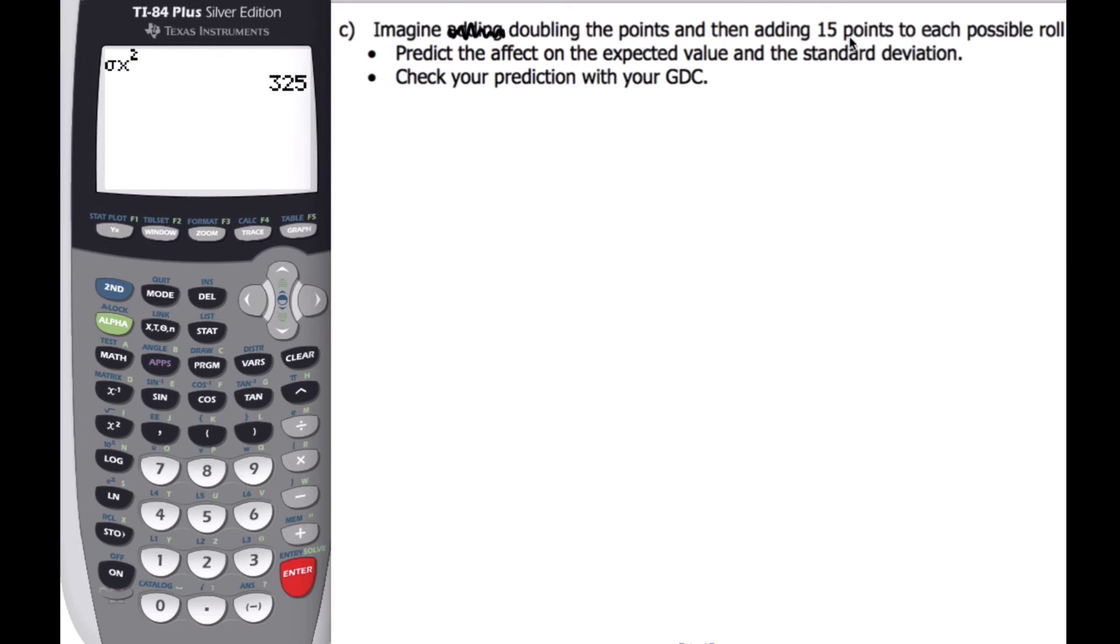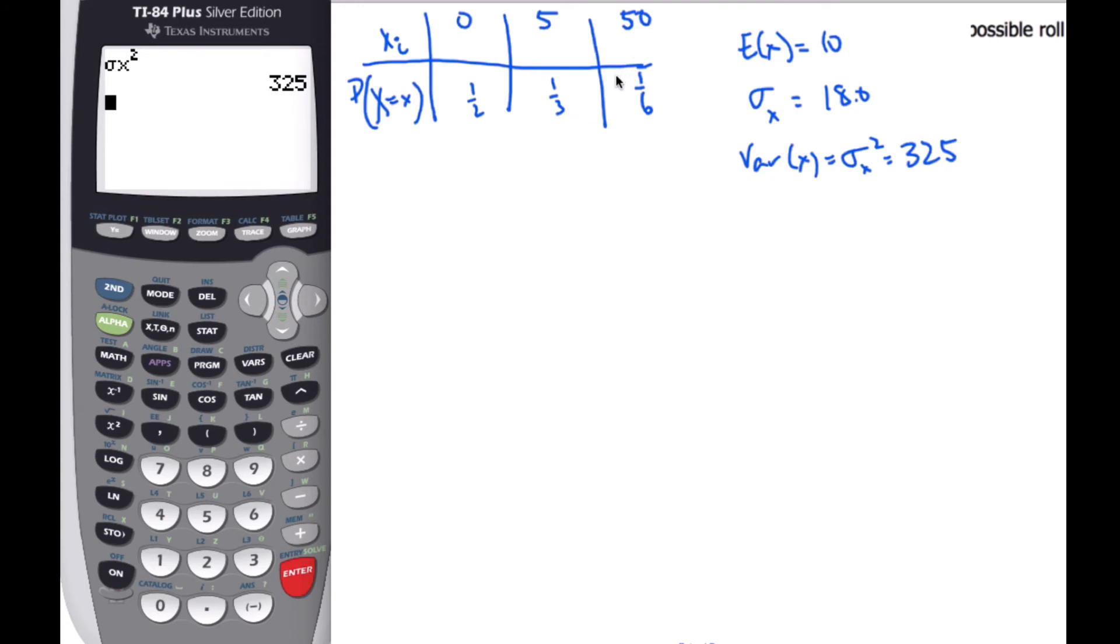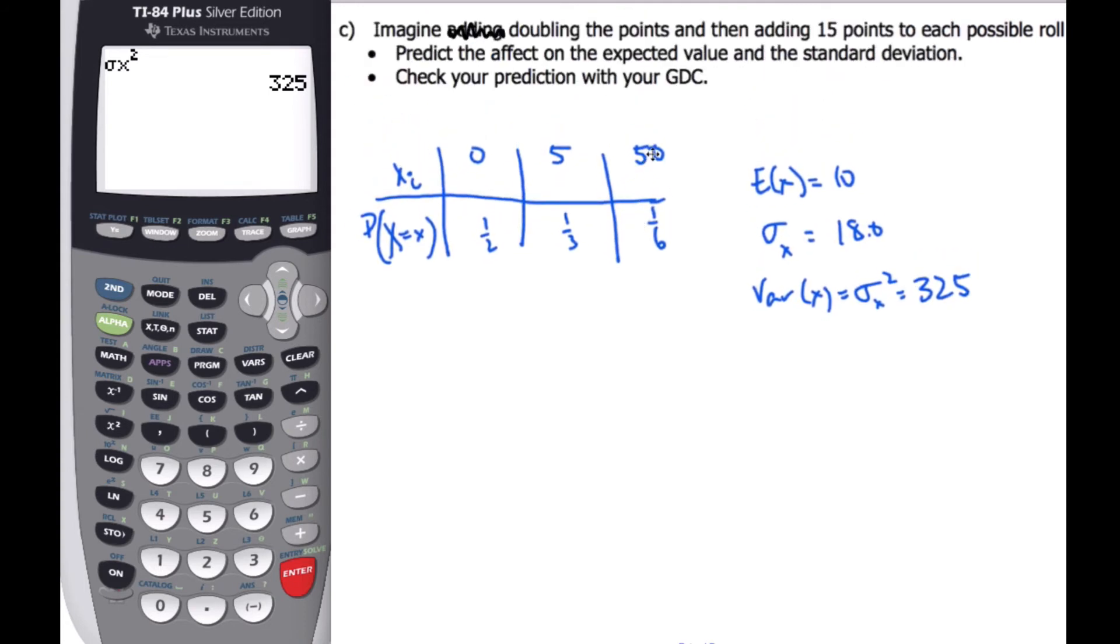Imagine doubling the points, then adding 15 points to each roll. Here's our game, let's remember our game. So I'm going to double each of these points, and then add 15 to them, and in doing so, I want to predict what the expected value is, and the standard deviation. I want you to take a moment, pause this video, and then actually see what you think you're going to do.